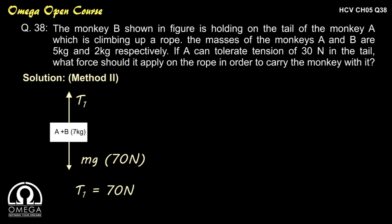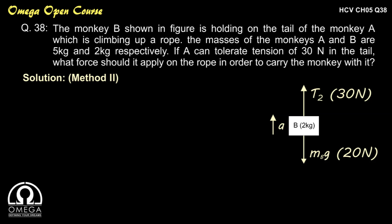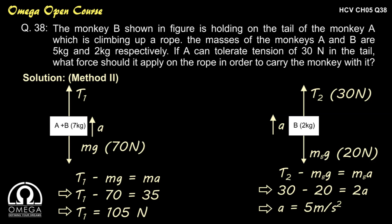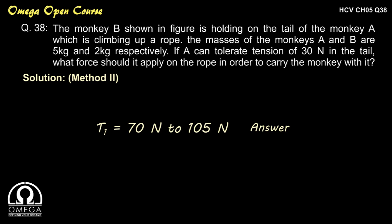To find the maximum acceleration, we look at the free body diagram of monkey B. The forces acting on it are T2 = 30 N (maximum tail tension) and weight 20 N, moving upward with acceleration A. This gives T2 − M_B × g = M_B × A, so 30 − 20 = 2A, yielding acceleration = 5 m/s². Back to the system diagram: T1 − 70 N = M × A = 7 × 5 = 35 N, thus T1 = 105 N. So the minimum and maximum force monkey A can apply on the rope is 70 N and 105 N.